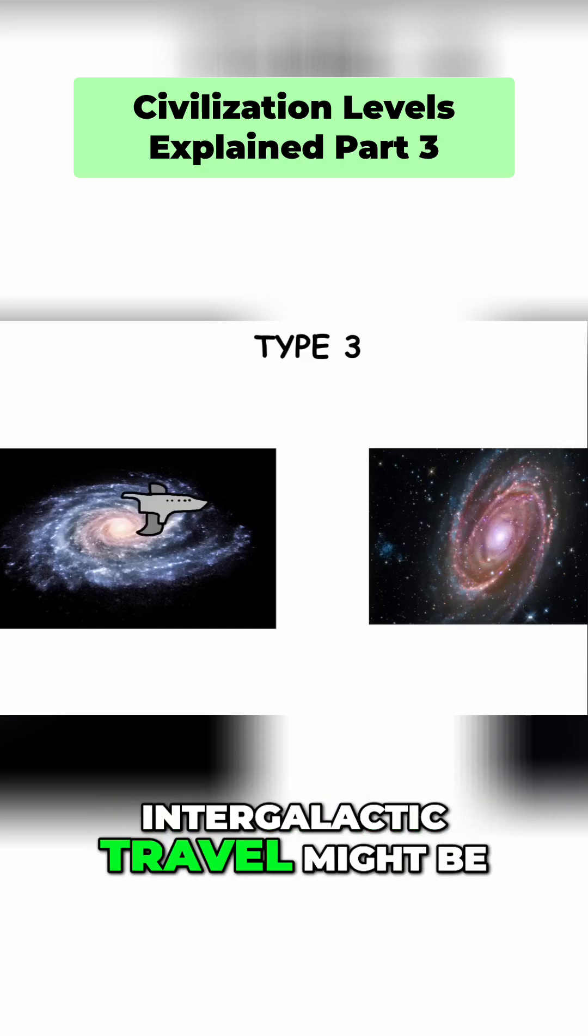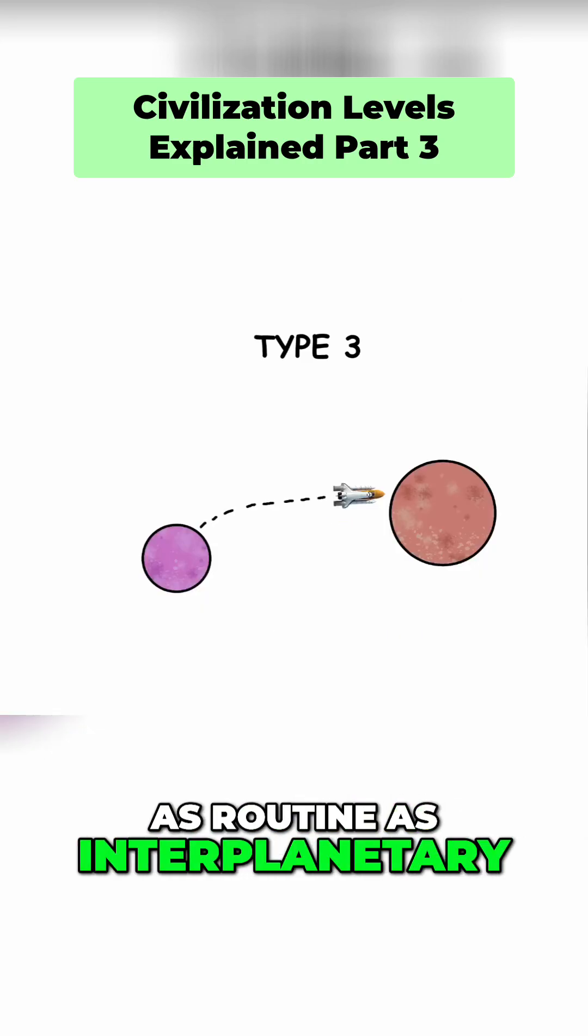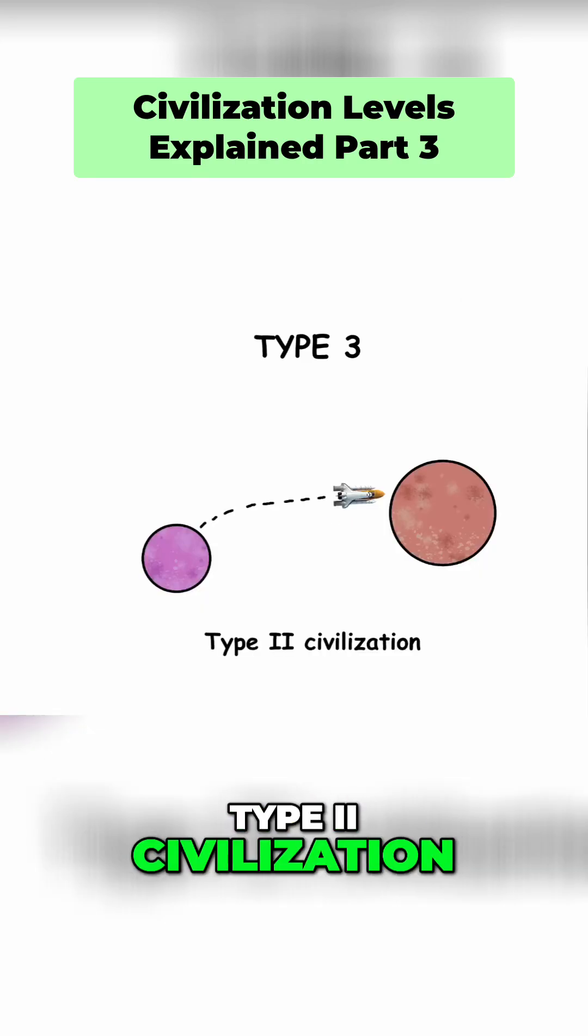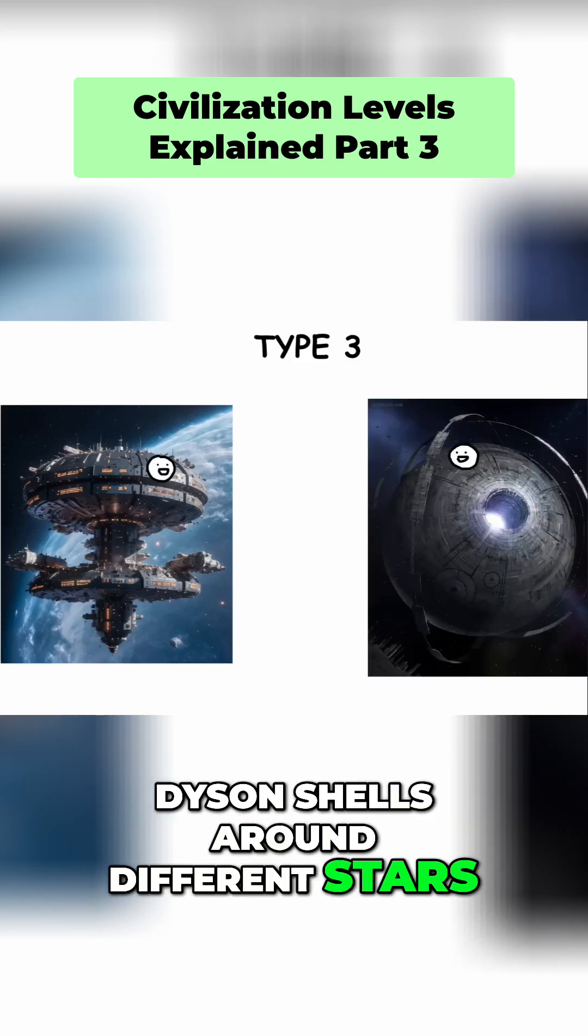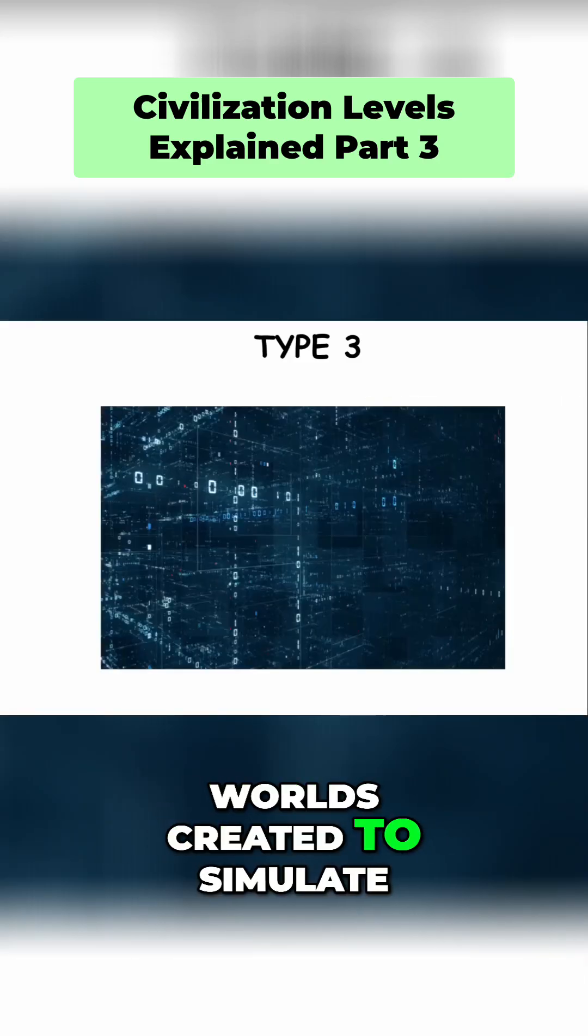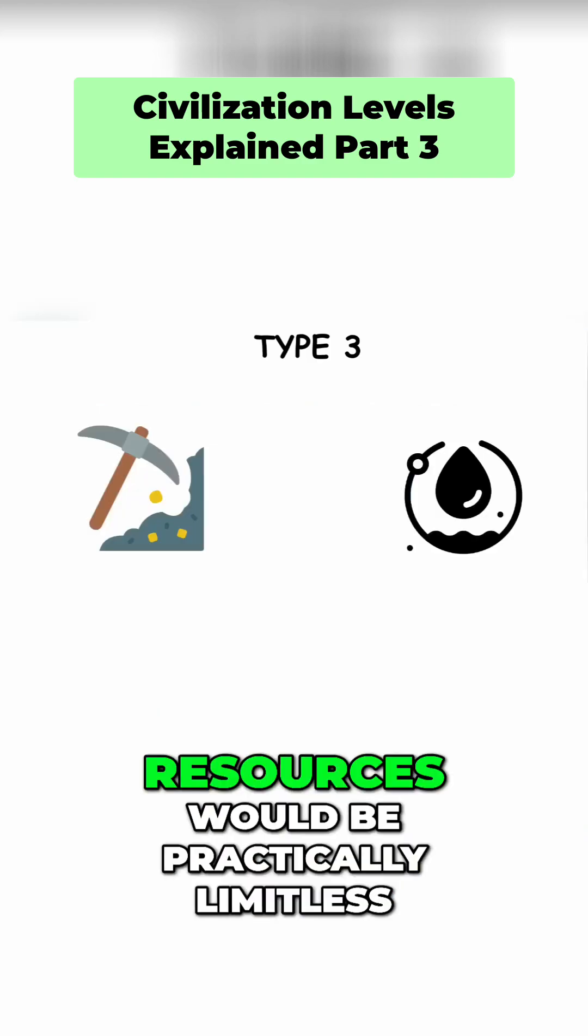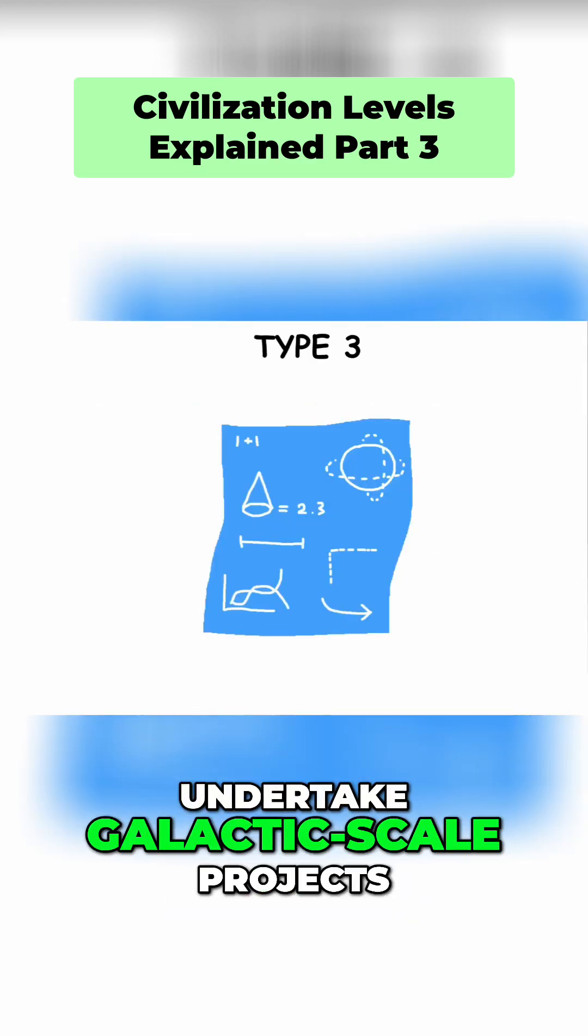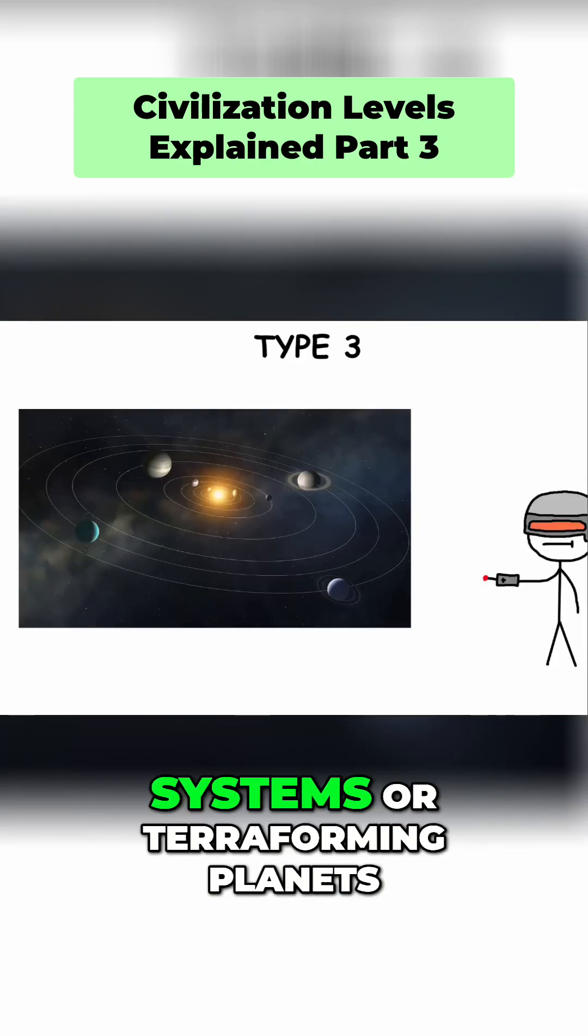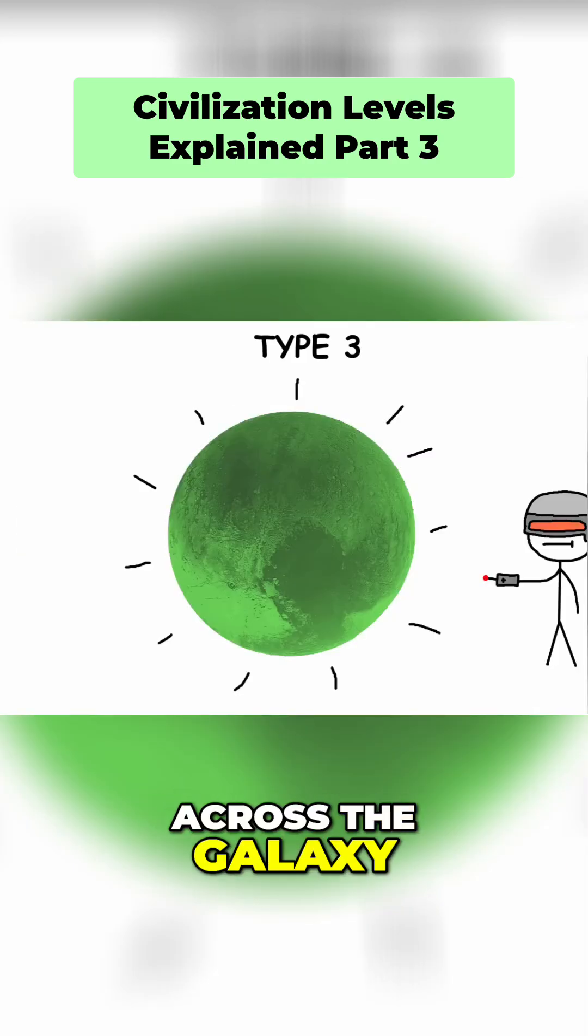In such a civilization, intergalactic travel might be as routine as interplanetary travel is for a Type 2 civilization. People could live on massive space stations or Dyson shells around different stars, and even in artificial worlds created to simulate any environment they desire. Resources would be practically limitless, and the civilization could undertake galactic-scale projects, like restructuring entire solar systems or terraforming planets across the galaxy.